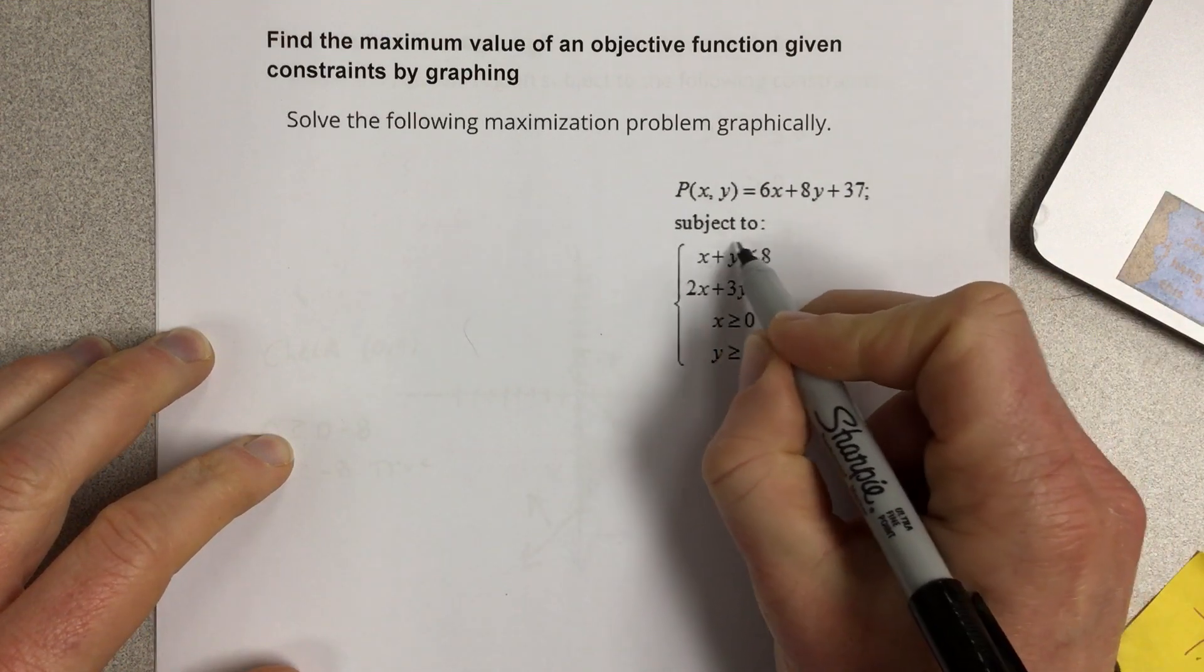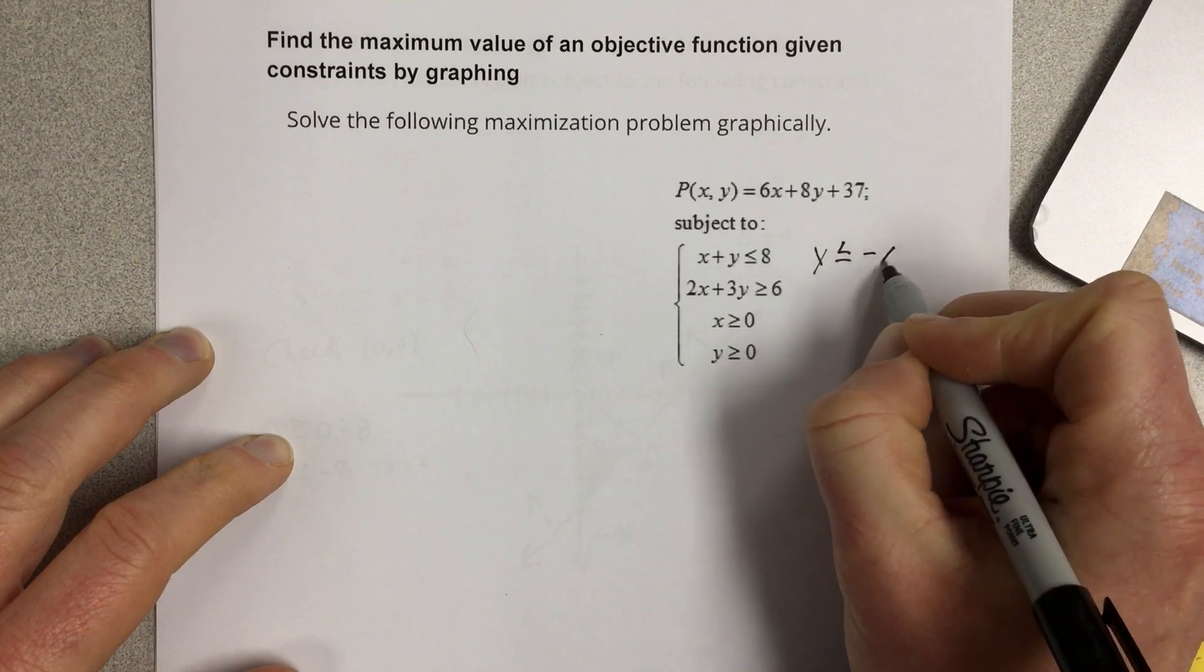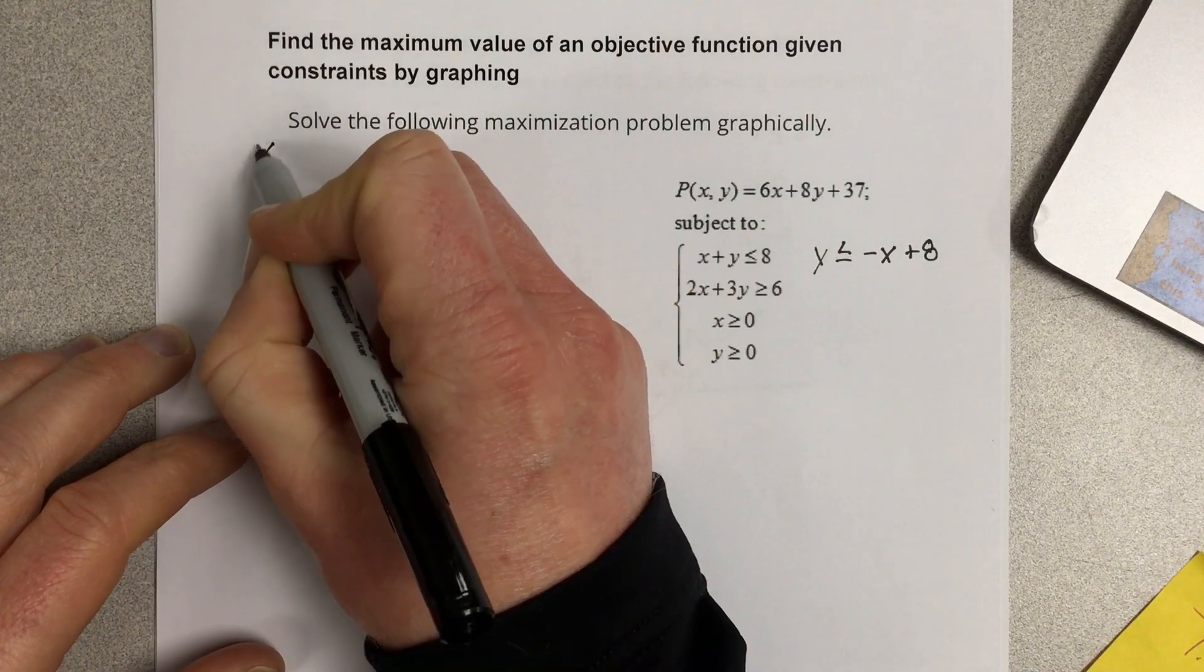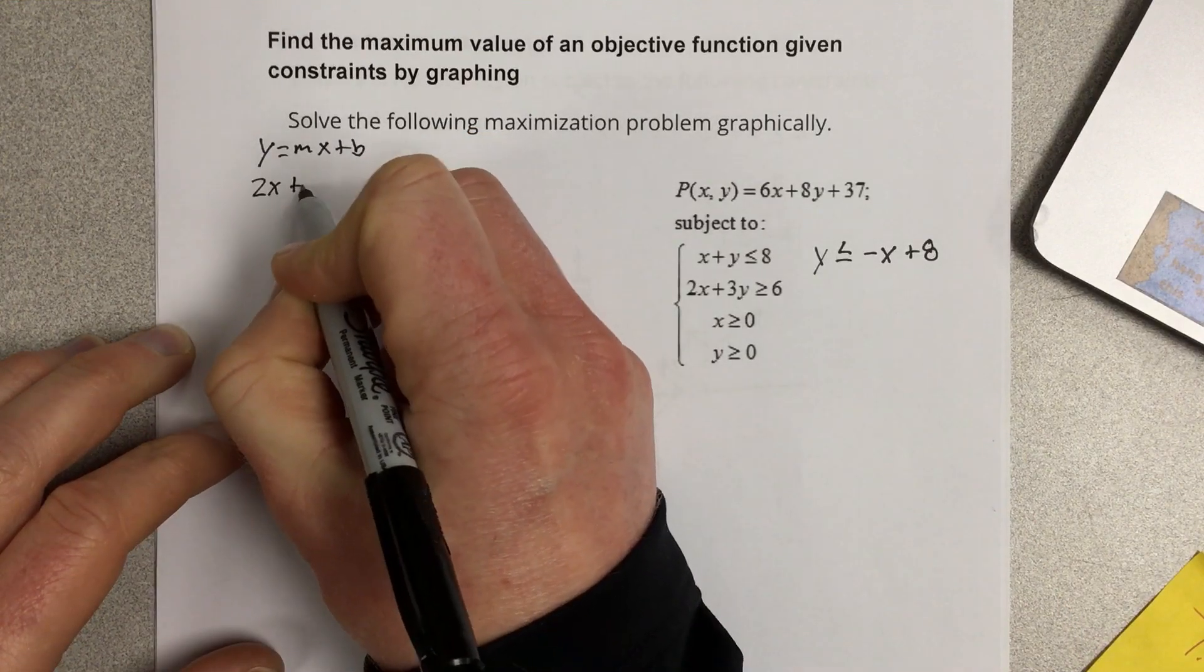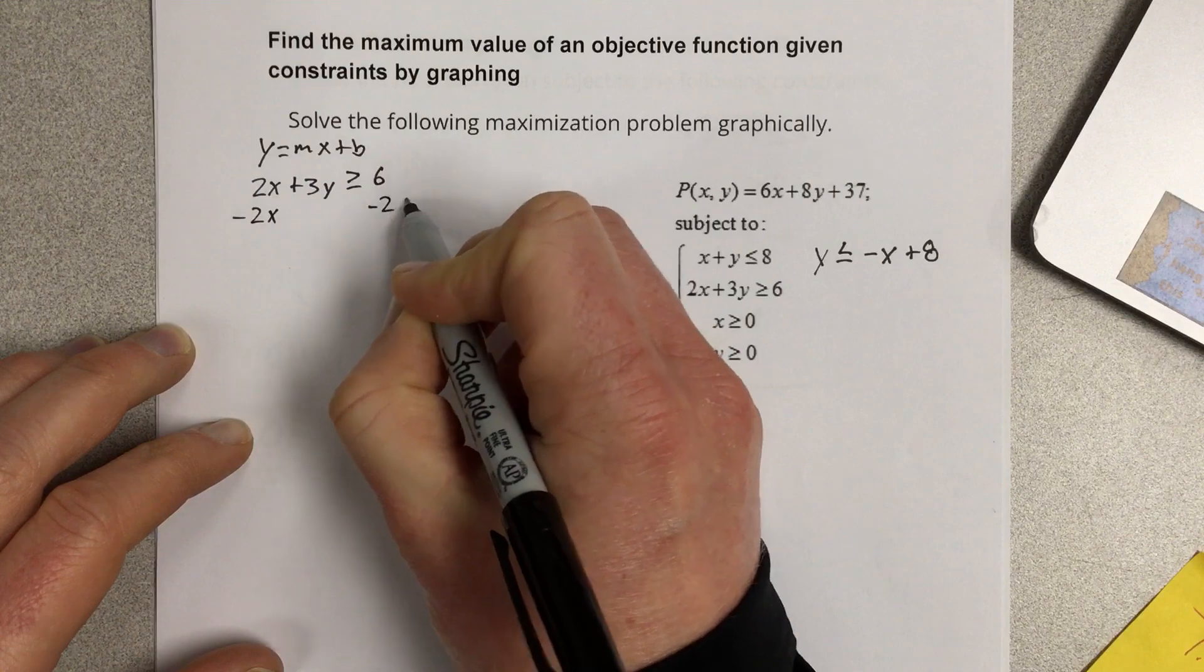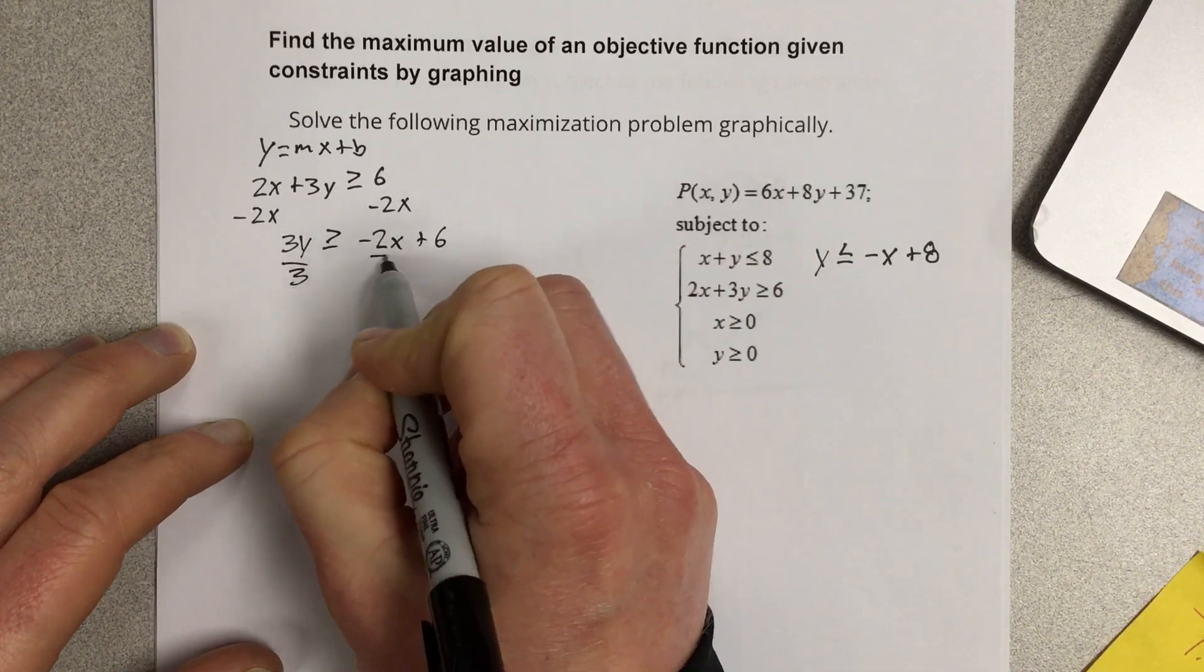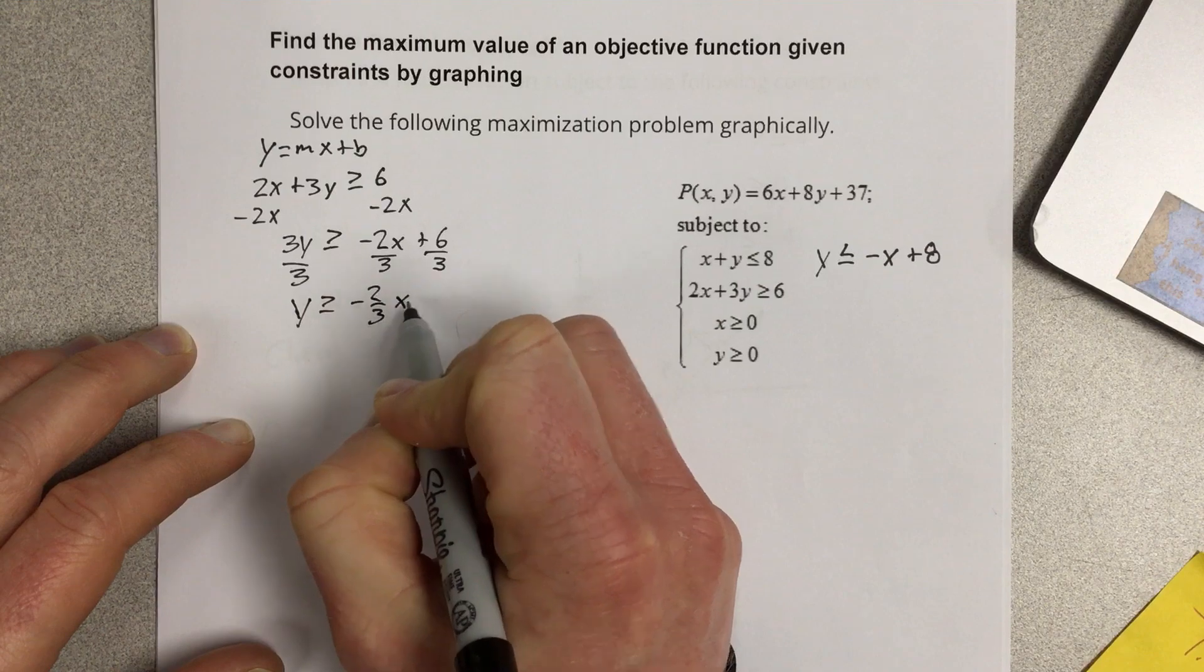So if I put this equation in slope-intercept form, that would be y is less than or equal to negative x plus 8. For this one, I'm going to need to do a little rewriting. I want it in y equals mx plus b form. So I'm going to say 2x plus 3y greater than or equal to 6. I'm going to subtract 2x from each side. So I get 3y greater than or equal to negative 2x plus 6. Divide by 3, and y is going to be greater than or equal to negative 2 thirds x plus 2.